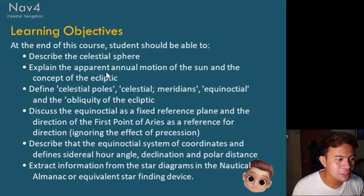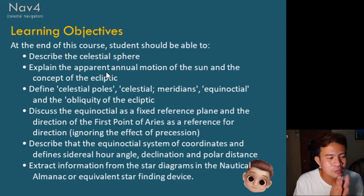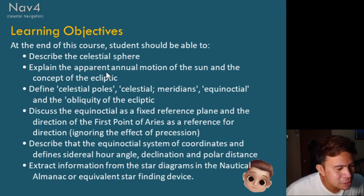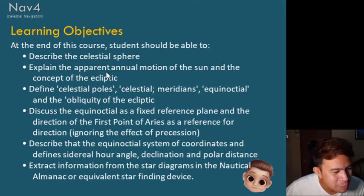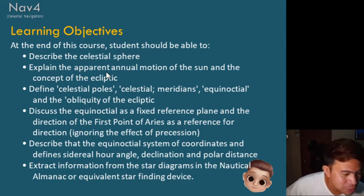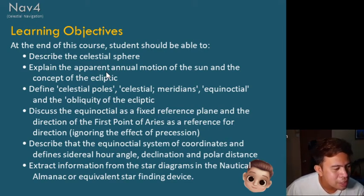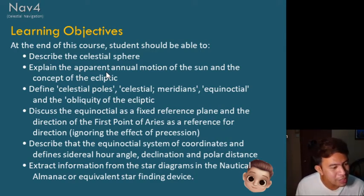We have our learning objectives. At the end of the course, you should be able to: describe the celestial sphere; explain the apparent annual motion of the Sun and the concept of the ecliptic; define celestial poles, celestial meridians, equinoctial, and the obliquity of the ecliptic; discuss the equinoctial as a fixed reference plane and the direction of the first point of Aries as a reference for direction, ignoring the effect of precession; describe the equinoctial system of coordinates and define sidereal hour angle, declination, and polar distance; and extract information from the star diagrams in the nautical almanac or equivalent star-finding device.